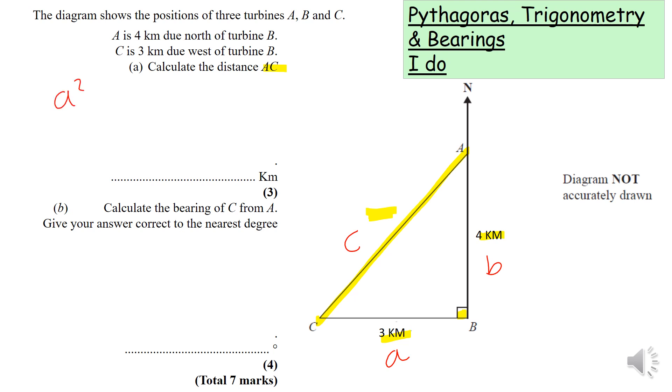Pythagoras's theorem states A² + B² = C². Let's plug in our values and work out the missing length. A is 3, square it, add 4 squared, equals 25. So C² = 25. Square root both sides leaves us with C = 5 kilometers.